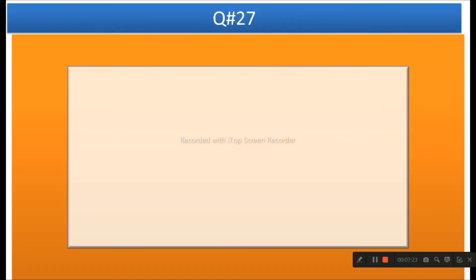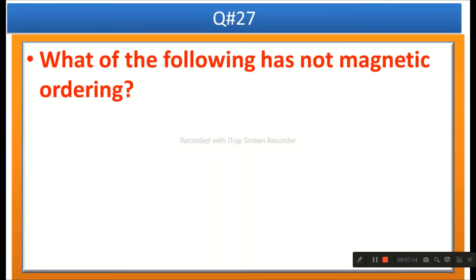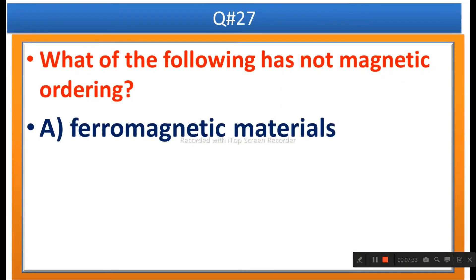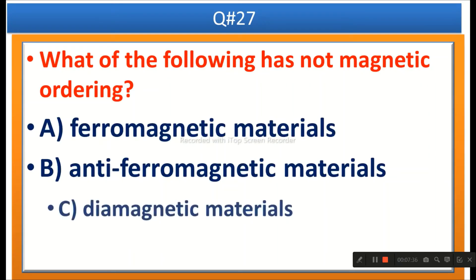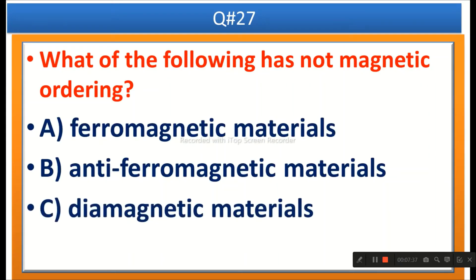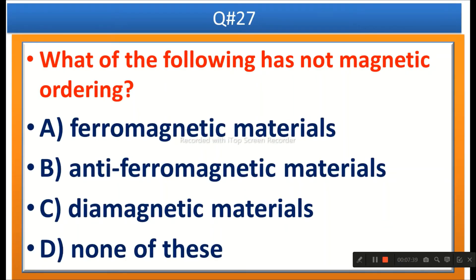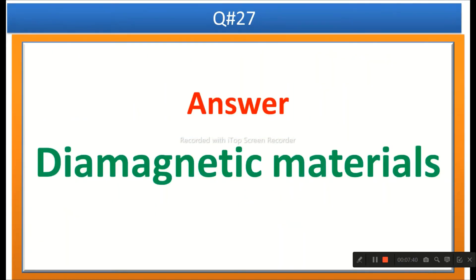The next question: Which of the following has no magnetic ordering? Options are ferromagnetic materials, anti-ferromagnetic materials, diamagnetic materials, or none of these. The right answer is diamagnetic materials.